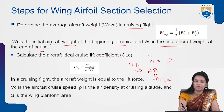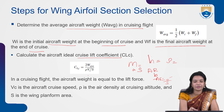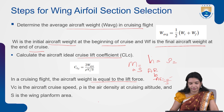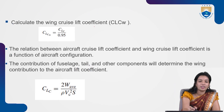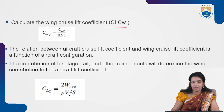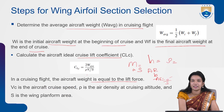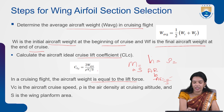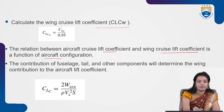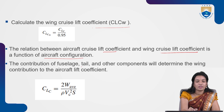The second step is to calculate the aircraft ideal cruise lift coefficient CL_c = 2W_avg / (ρV²S). Density ρ comes from altitude, velocity V may come from Mach number, and surface area S from the aspect ratio (AR = b²/S). The third step is to calculate the wing cruise lift coefficient: CL_cw = CL_c / 0.95. The contribution of the fuselage, tail, and other components will determine the wing's contribution to the aircraft lift coefficient.